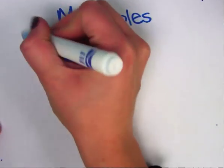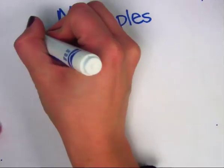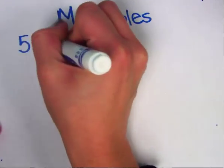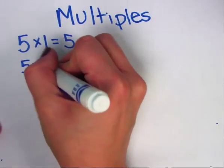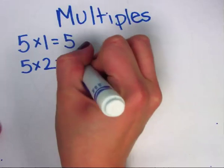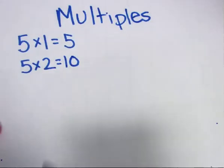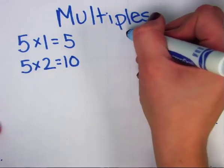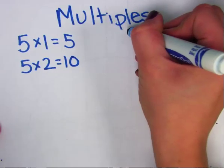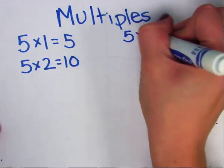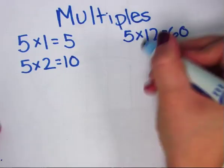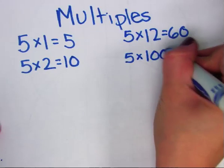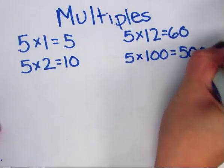For example, if I wanted to find multiples of 5, I would say 5 times 1 equals 5, 5 times 2 equals 10. I can keep going and pick any other number to multiply 5 by. I can say 5 times 12 equals 60, and even 5 times 100 equals 500.